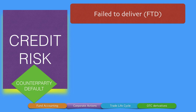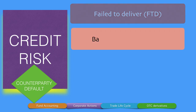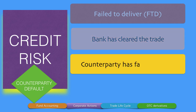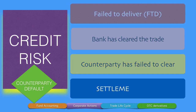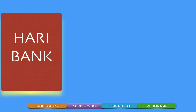A credit risk arises if the counterparty has failed to deliver. This is called an FTD trade — a failed-to-deliver trade. The bank has cleared the trade, meaning the bank has done the pay-in, but the counterparty has failed to clear the trade and has not done the pay-in. If one party makes the pay-in but the other counterparty fails to do so, we call this a settlement failure — one has agreed and delivered, the other has agreed but not delivered.